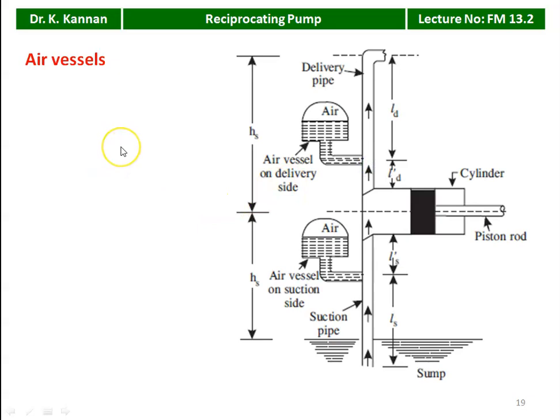Regarding the air vessel — in the previous lecture, we discussed the reciprocating pump without the air vessel, and we said the delivery of a single acting reciprocating pump is intermittent. For every revolution of the crankshaft, there will be only one delivery. If you want continuous delivery of water, we use the double acting reciprocating pump.